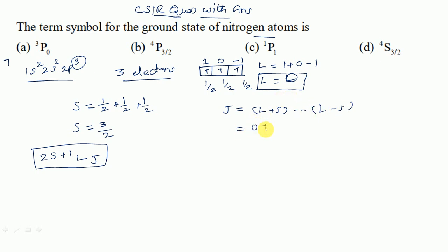So L is 0 plus 3/2 to 0 minus 3/2. So 3/2 to minus 3/2. We can take the positive value, J equals 3/2.